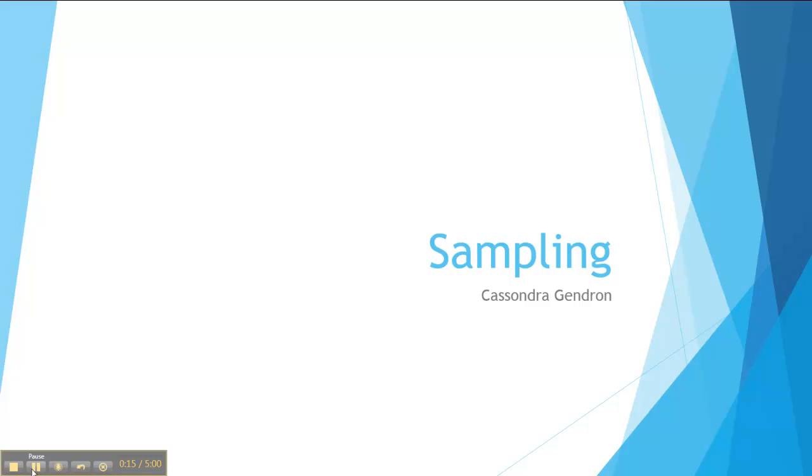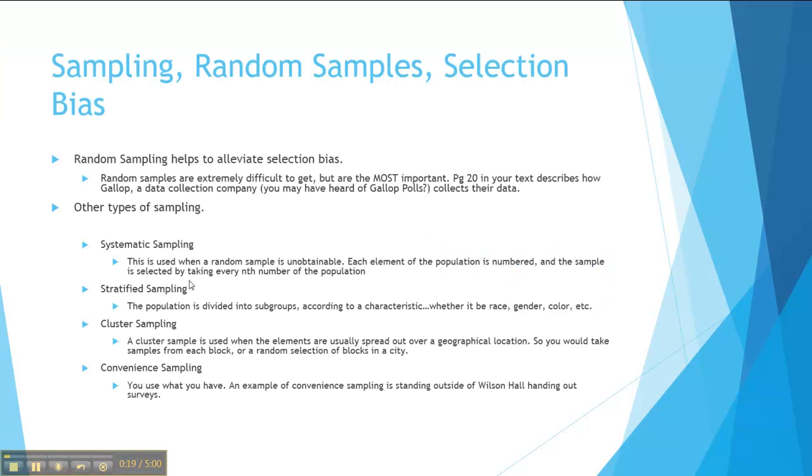So let's look at sampling, random samples, and selection bias. A random sample helps alleviate what we call selection bias, and I'm going to get into in depth what selection bias really is. Random samples are extremely difficult to get, but they are the most important. But other types of sampling are systematic sampling, stratified sampling, cluster sampling, and convenience sampling.